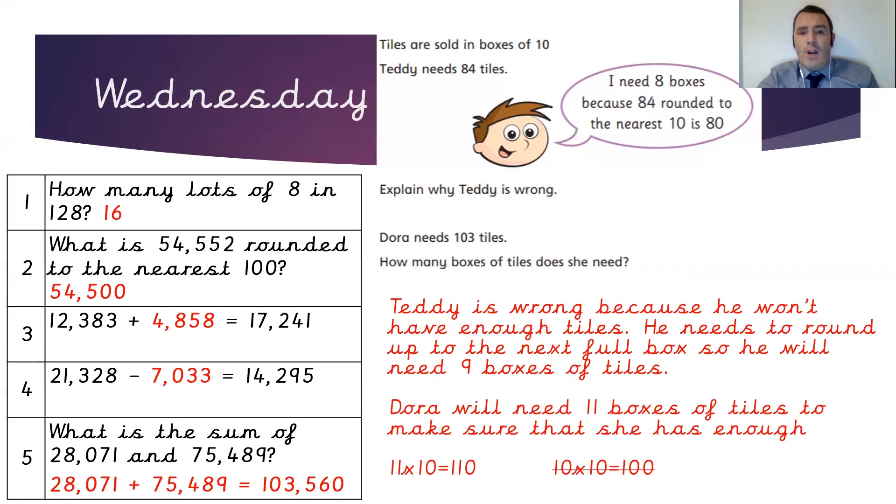For the same reason, Dora would need to order one more box than it would necessarily round to. Dora will need 11 boxes of tiles to make sure she has enough. 11 times 10 gives us 110, which is more than 103. 10 times 10 only gives us 100, which is not enough tiles.